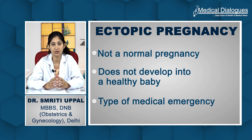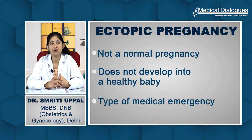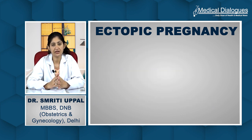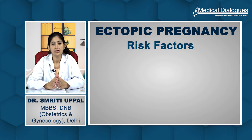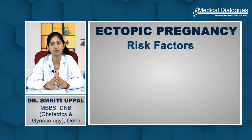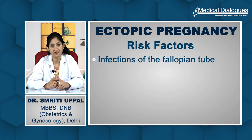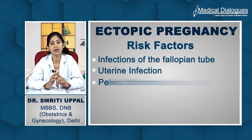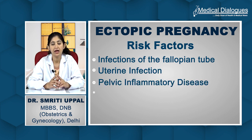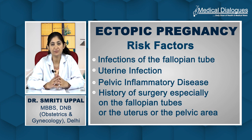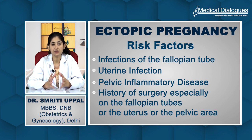So let us see why ectopic pregnancy happens. There are some risk factors and some patients who have a chance to develop ectopic pregnancy. Number one is any kind of infection of the fallopian tubes, the uterus, uterine infection, or pelvic inflammatory disease. Number two is any history of surgery, specially on the tubes, the uterus, or the pelvic area.